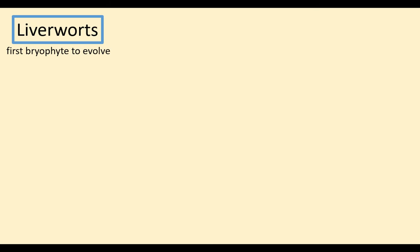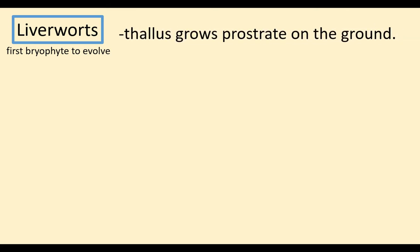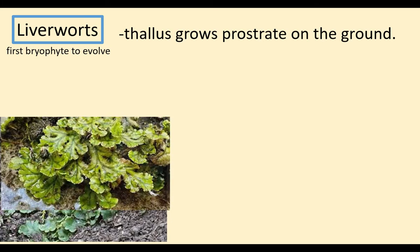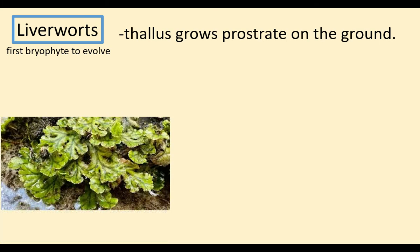Liverworts are the first class of bryophytes. They were the first bryophytes to evolve on the earth's surface. The thallus grows prostrate on the ground. Prostrate growth is when a plant grows, bends down, and then comes up again.